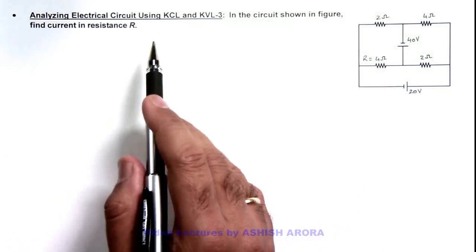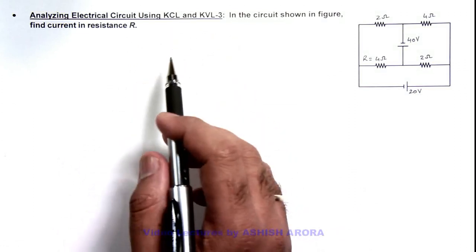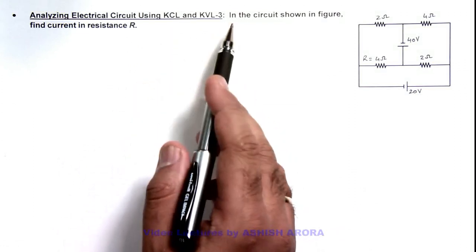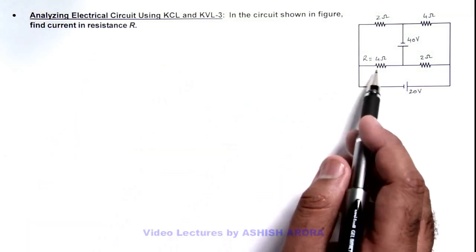In this illustration, we analyze this electric circuit using Kirchhoff's current law and voltage law. Here, in the circuit shown in figure, we are required to find the current in this resistance R.